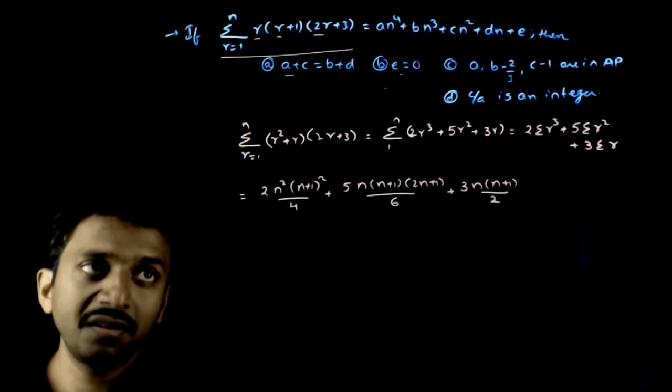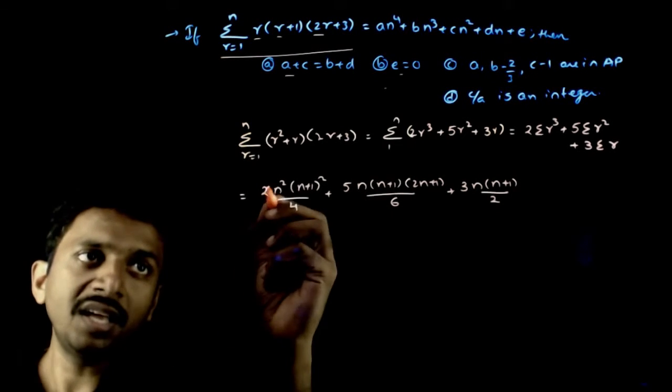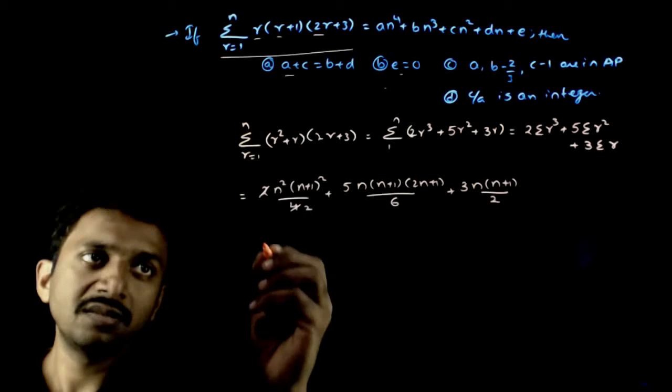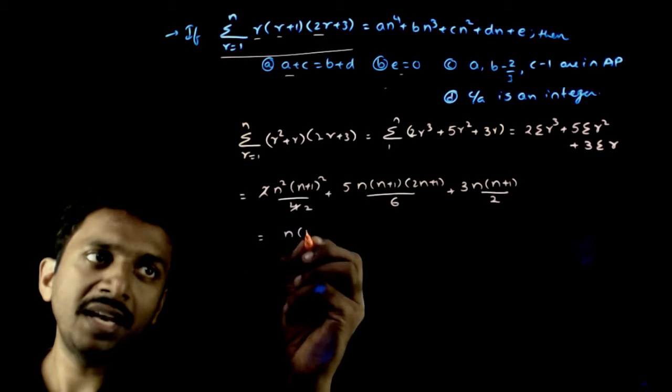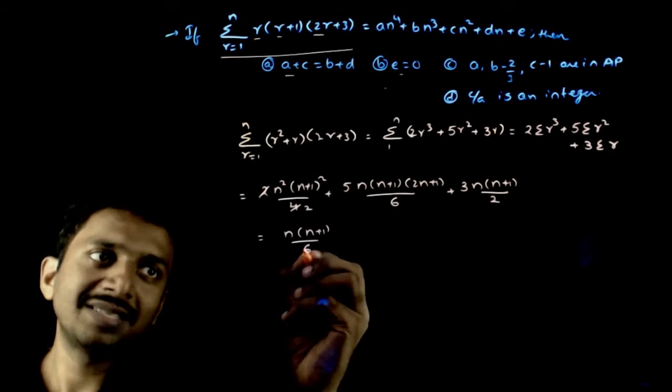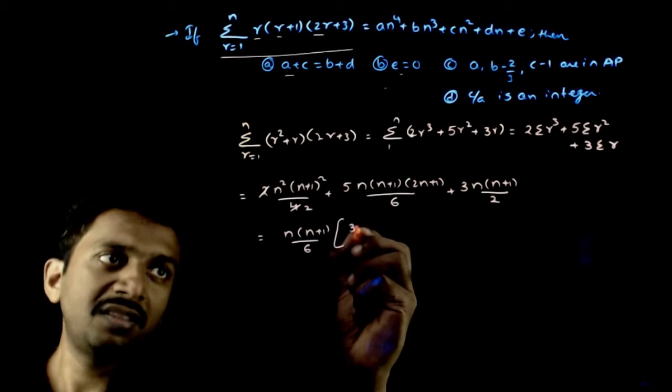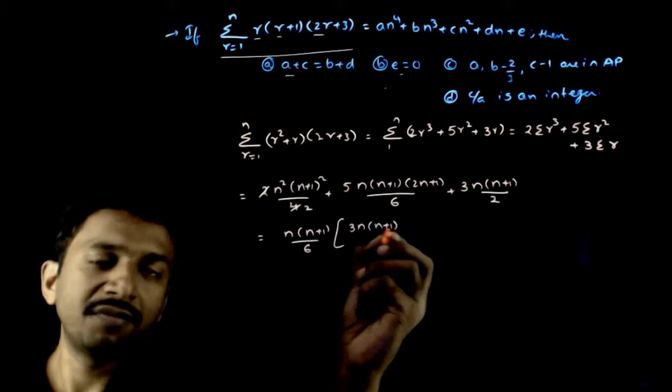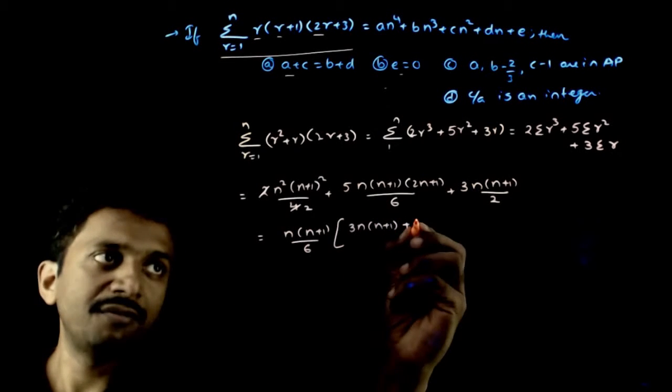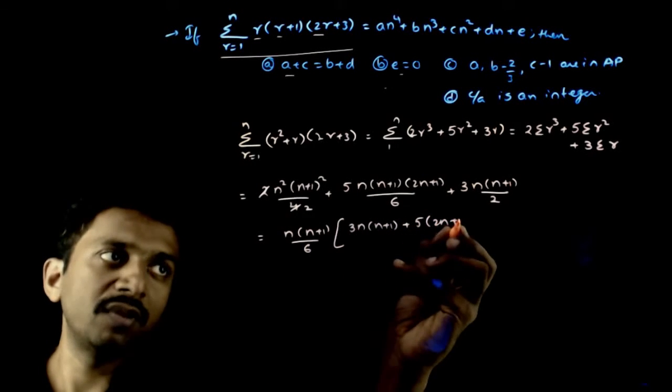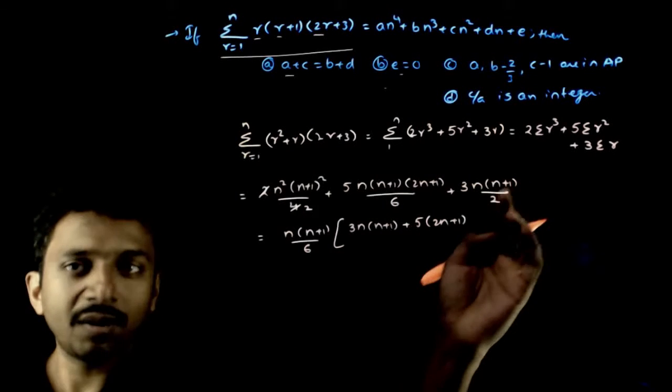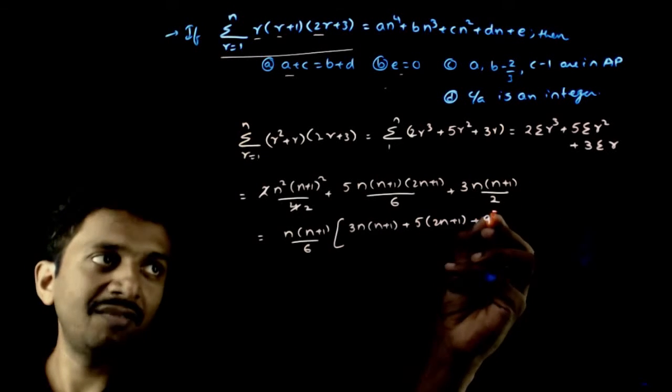Now, if you simplify this, you get a 4th degree in n. Simplify this. I will take n into n plus 1 by 6 as common. 3n into n plus 1 will be left out, and here 5 times 2n plus 1, so 9 will be left out.